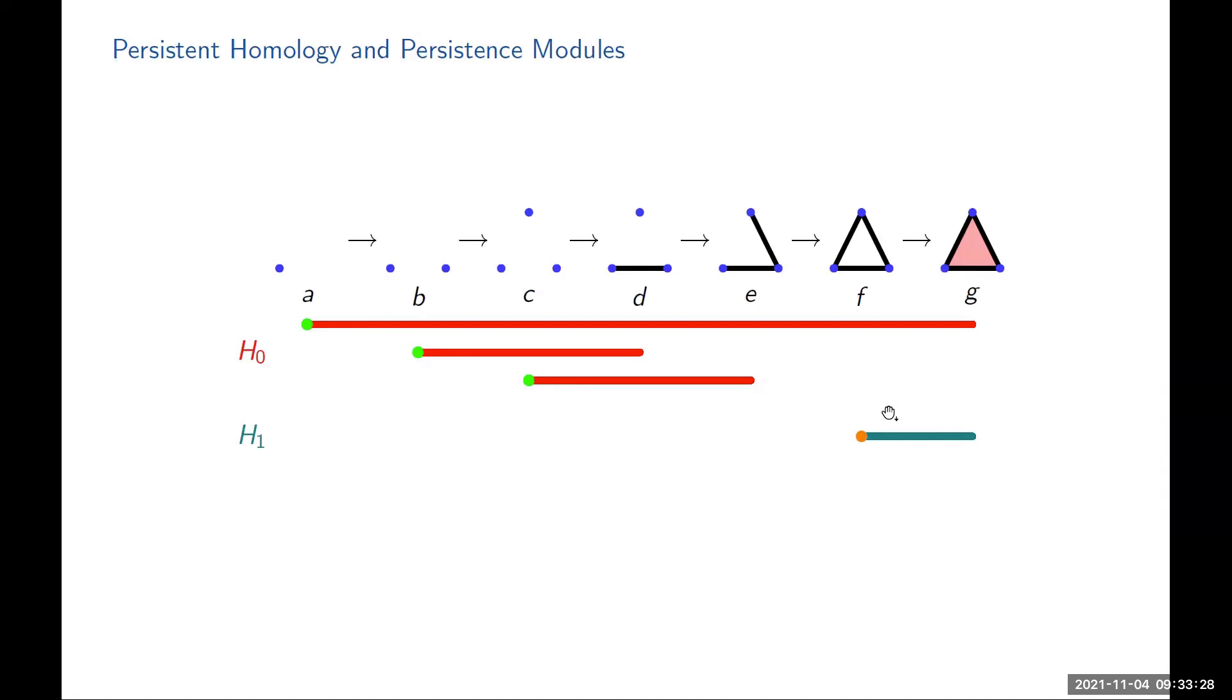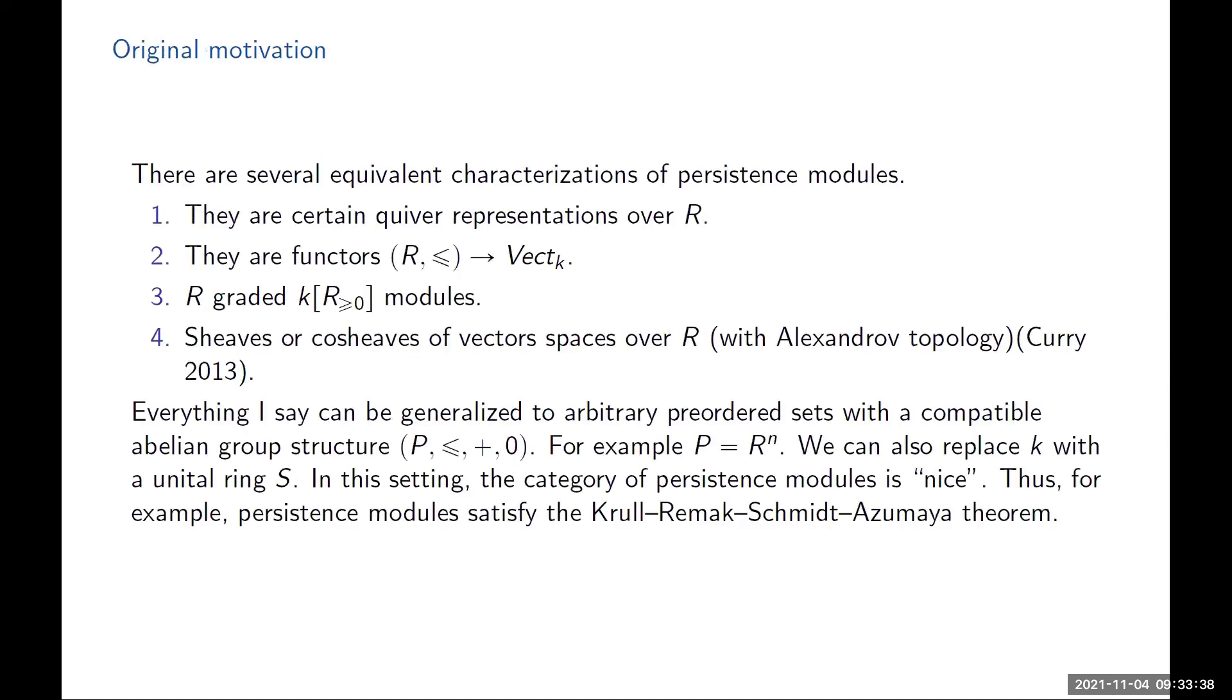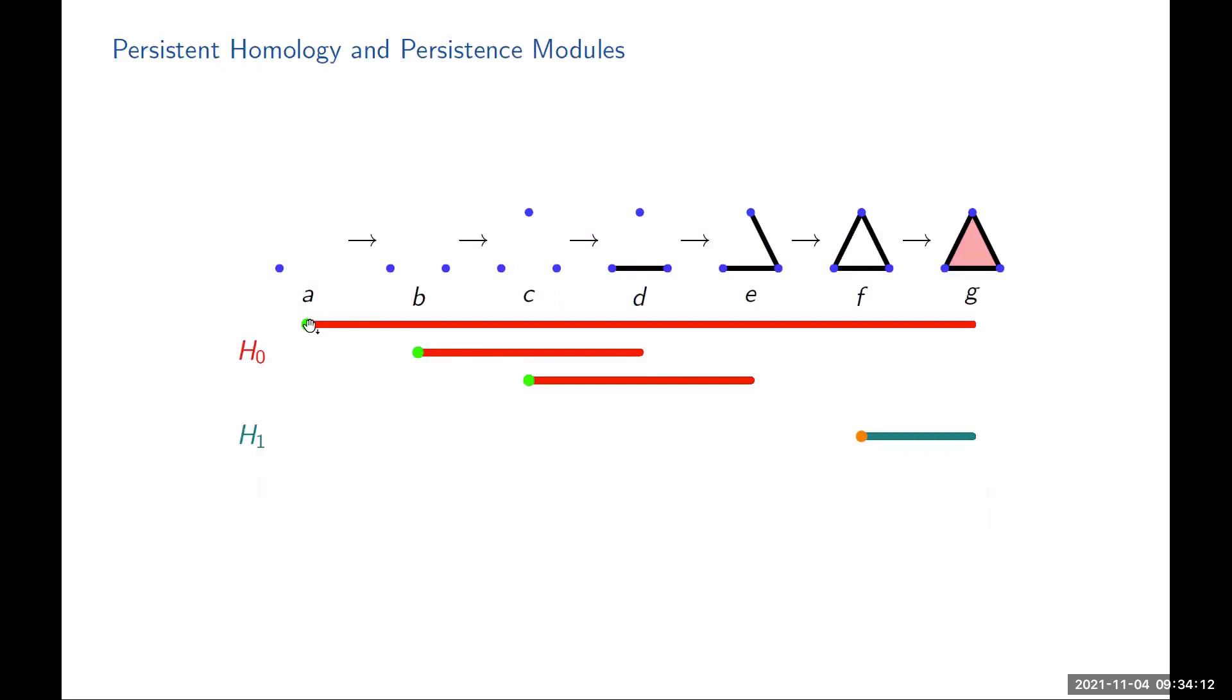I was interested in these objects, these barcodes, which we call persistence modules. They have a very rich algebraic structure. Depending on your algebra background, there are several equivalent ways to think about these objects. You can think of them as quiver representations over R, or as functors from (R,≤) into vector spaces. You can think of them as R graded modules, or as sheaves and cosheaves. They have a very rich algebraic structure, which means they're nice. Just like finitely generated modules over a principal ideal domain, there's a structure theorem that means you can split them into this decomposition uniquely. You should think of the infinite bar as the free part and all these finite bars as the torsion parts.